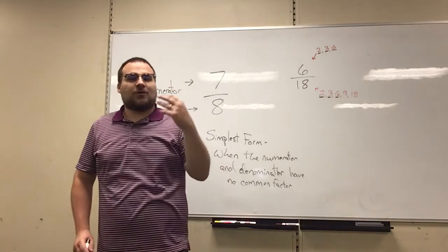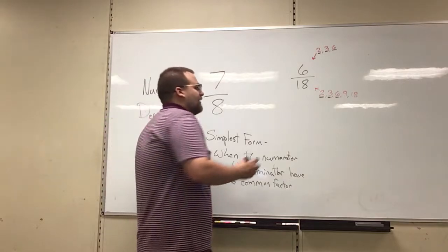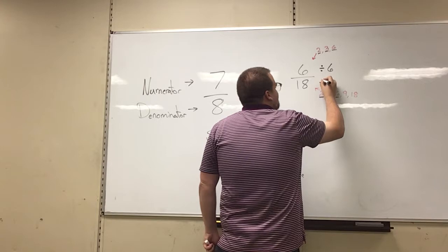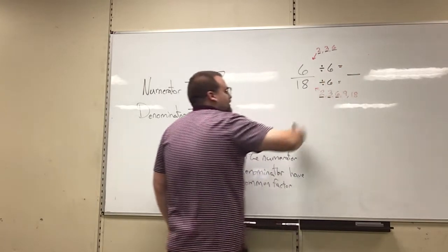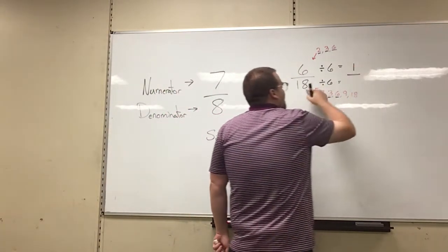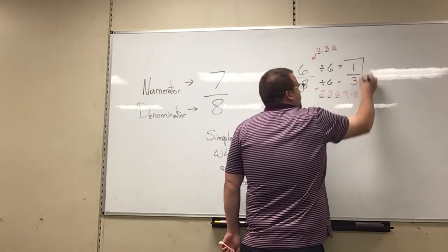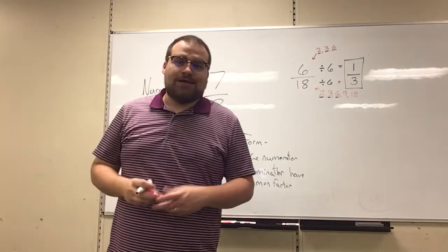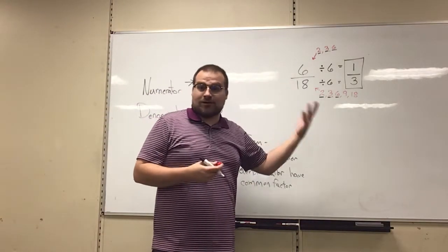So that's the number we want to take out or divide from each part of the fraction. So I'm going to do that. 6 divided by 6, and 18 divided by 6. Now 6 divided by 6, a number divided by itself, is just going to be 1. And then 18 divided by 6 is going to give us 3. So we find that 1 over 3, or 1 third, is actually our simplest form way of writing 6 over 18.